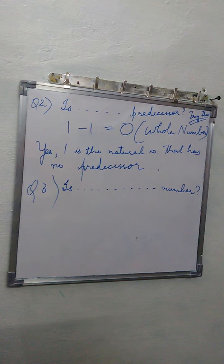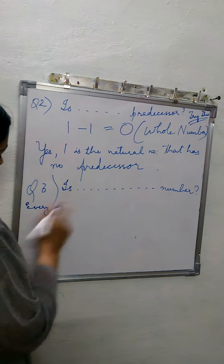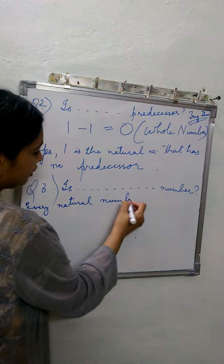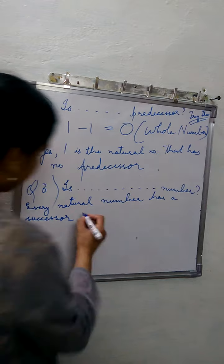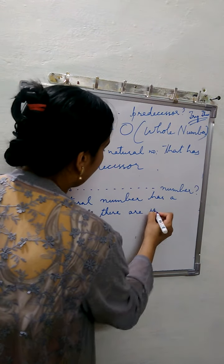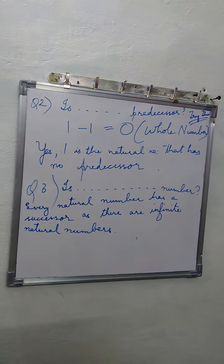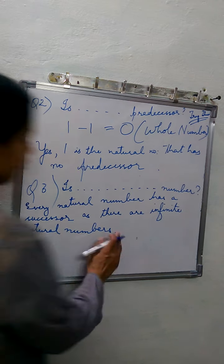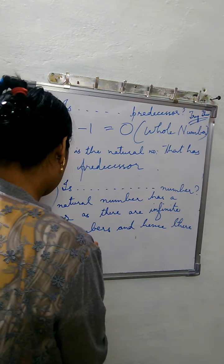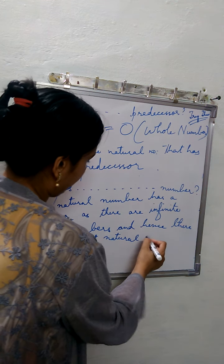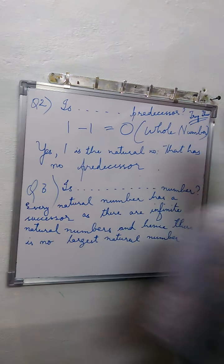Every natural number has a successor because the numbers are infinite. We don't know the last natural number. Every natural number has a successor as there are infinite natural numbers, and hence there is no largest natural number.